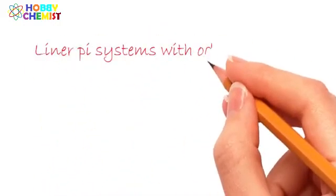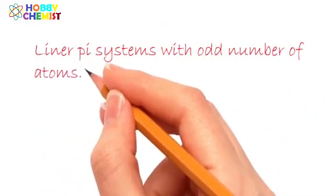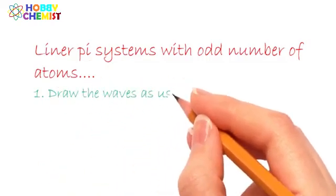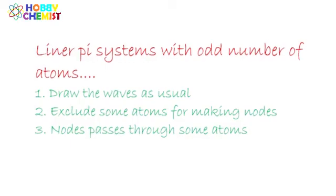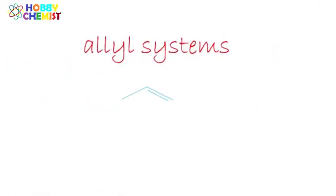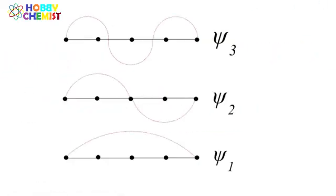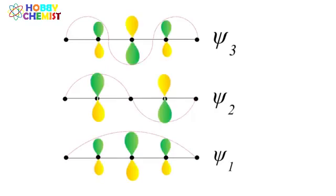For molecular orbitals of linear systems with odd number of atoms, we may have to exclude some atoms to create nodes. In the case of allyl systems, Psi-2 has a node passing through one of the atoms. It means that the atom present at the node does not contribute to the molecular orbital concerned.